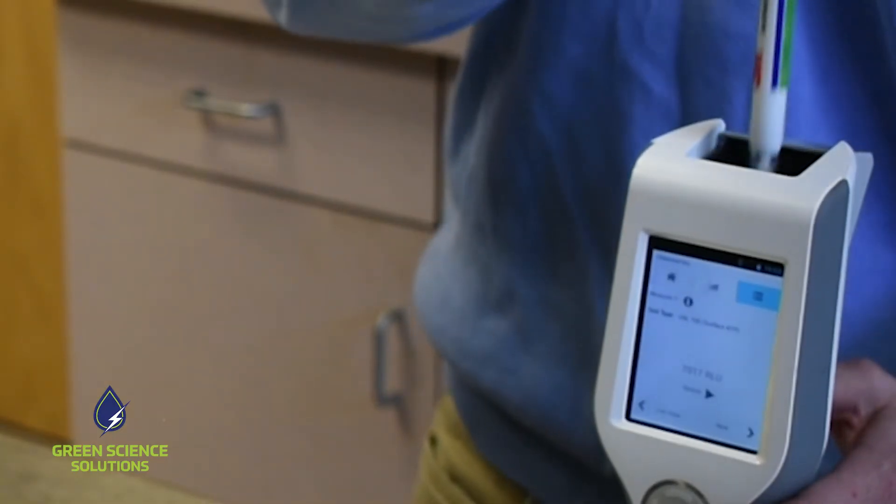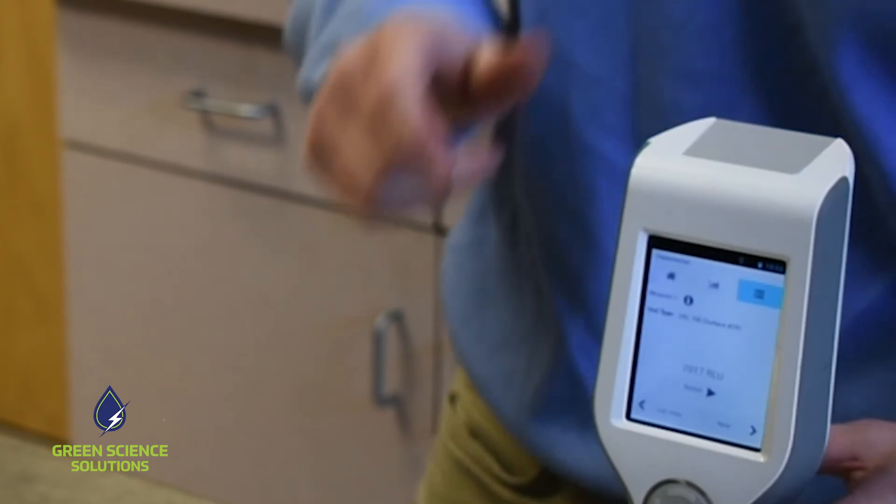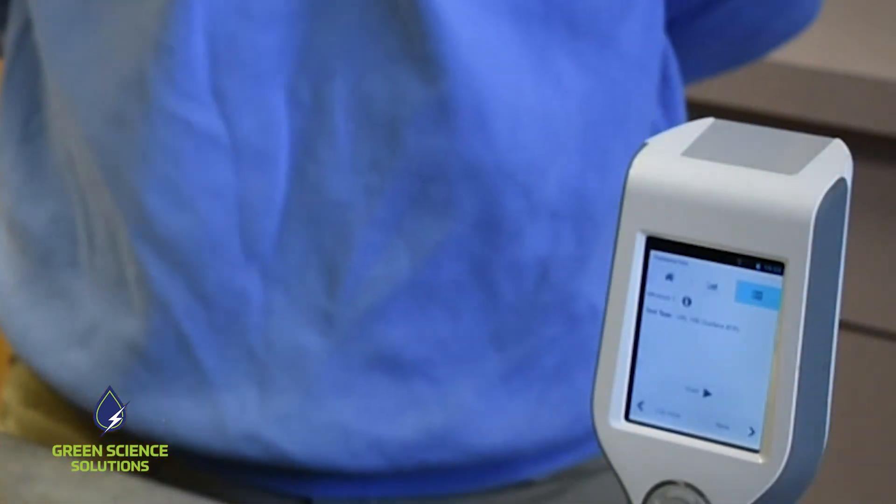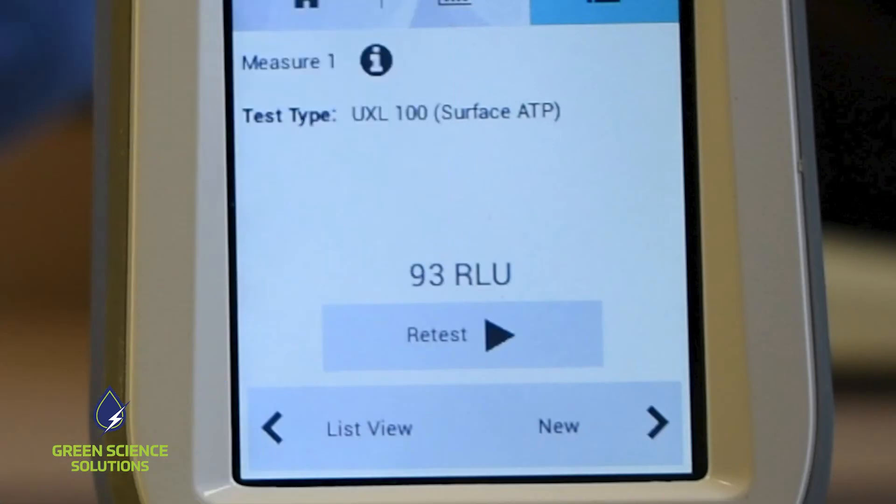The second swab and solution go into the LM1 and you'll get a new reading that will tell you how much dirt or ATP has been lifted off of that surface. And here's our new number.